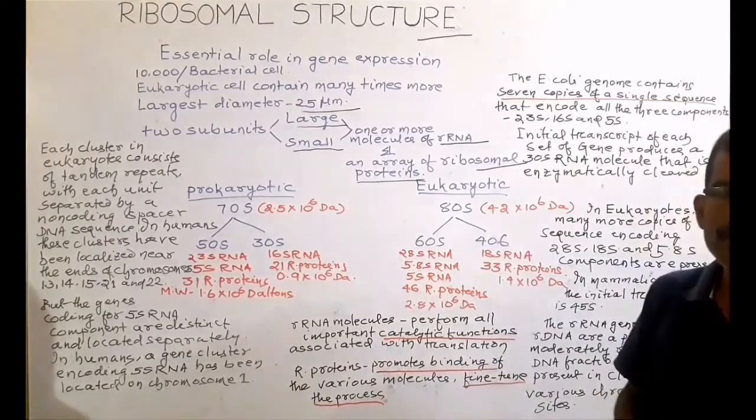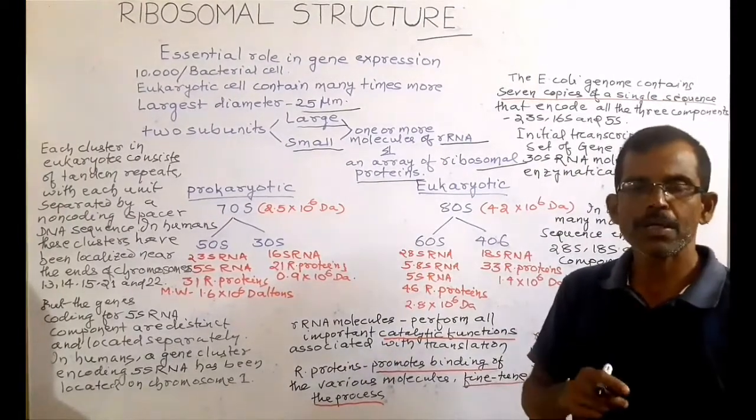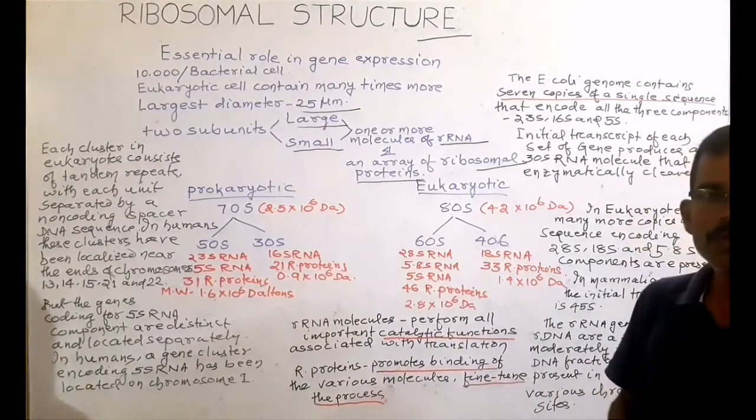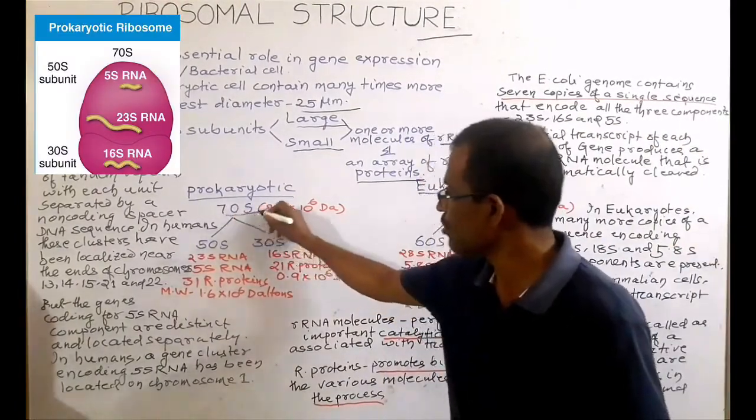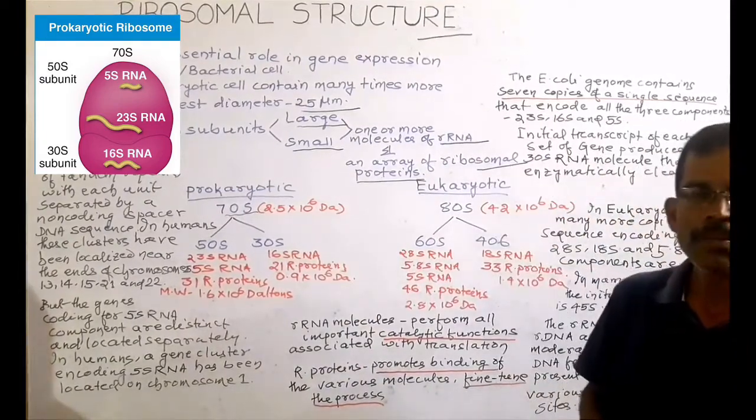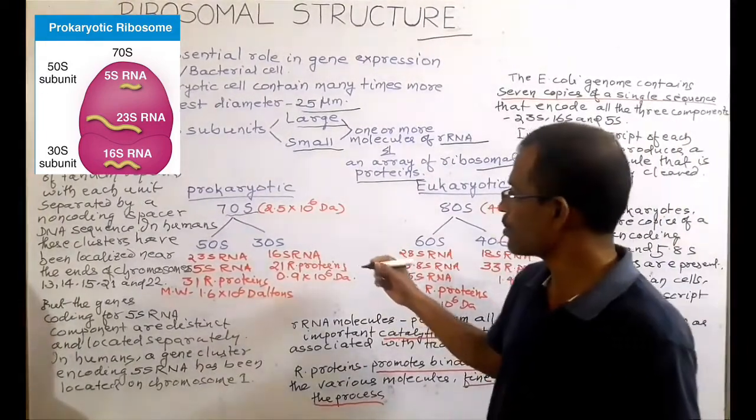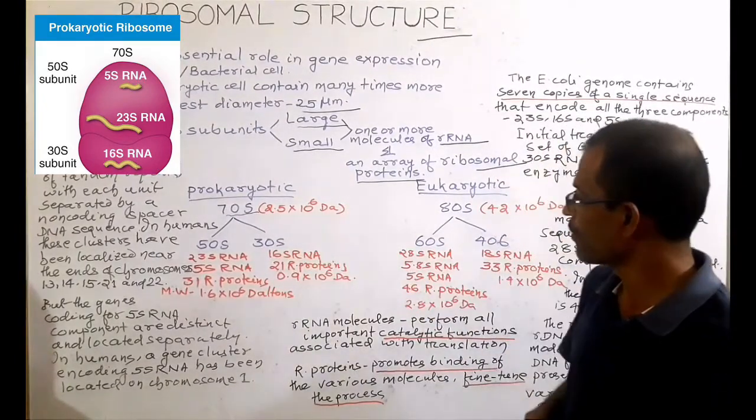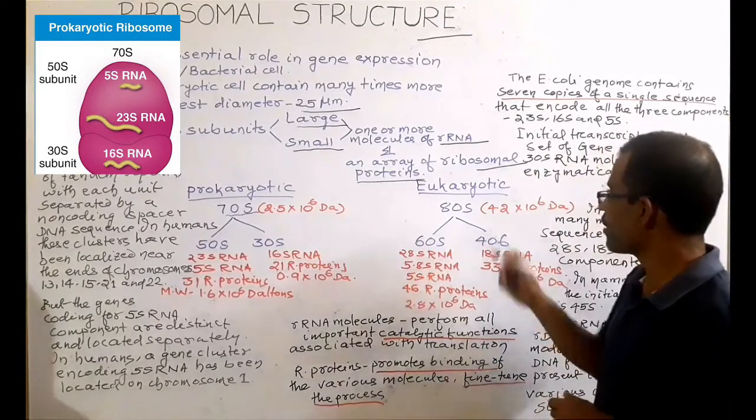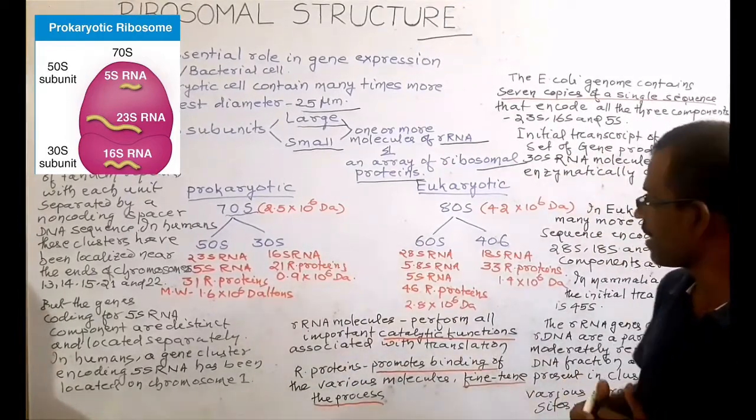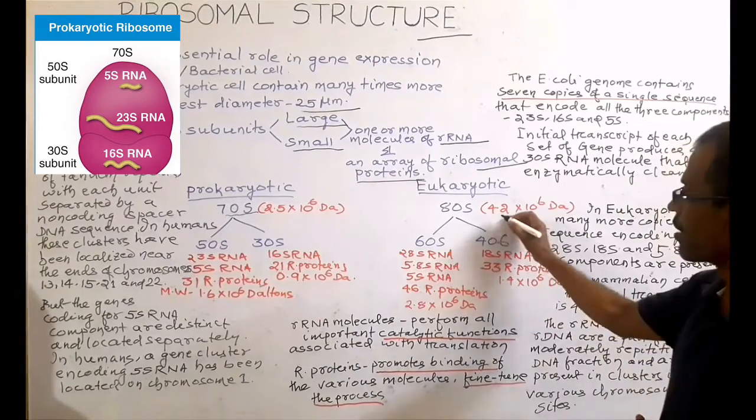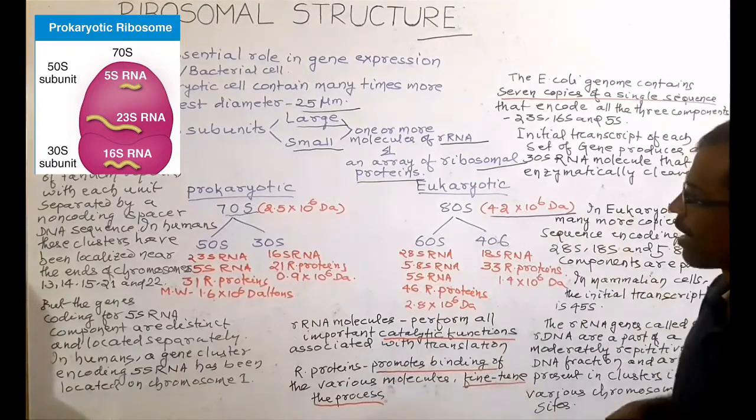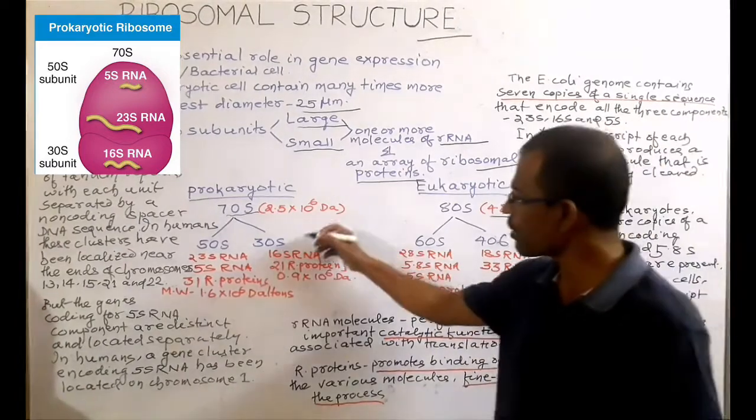There are many differences between prokaryotic and eukaryotic ribosomes. Prokaryotic ribosomes are 70S ribosomes with an approximate molecular weight of 2.5 × 10^6 Dalton. Whereas eukaryotic ribosomes are 80S with an approximate molecular weight of 4.2 × 10^6 Dalton.